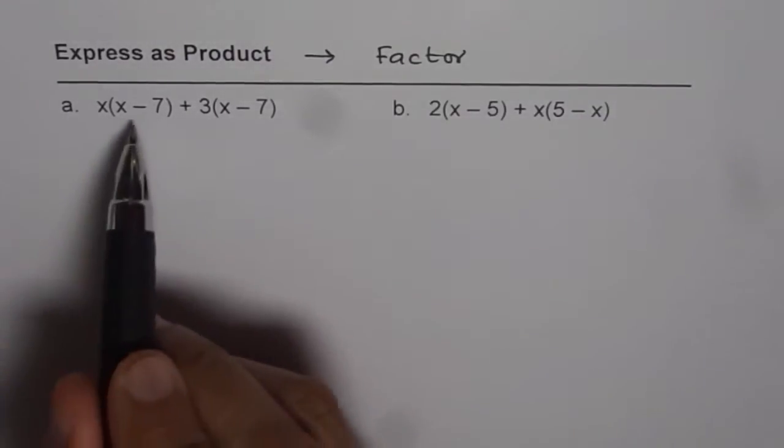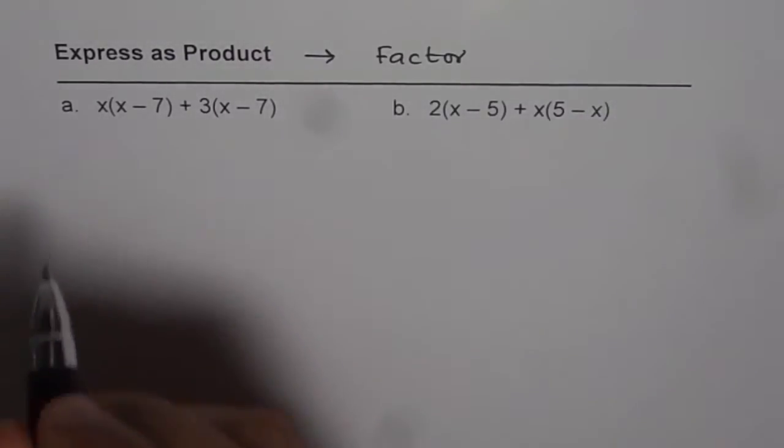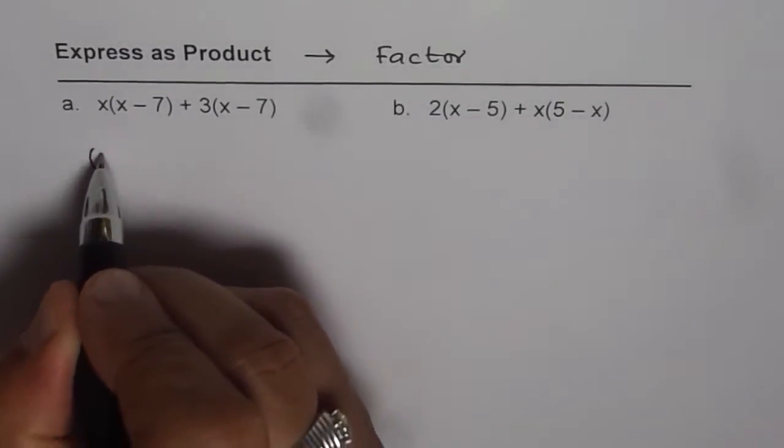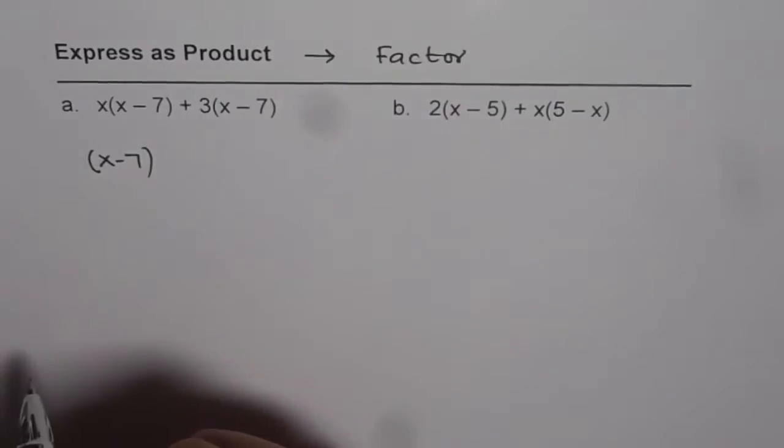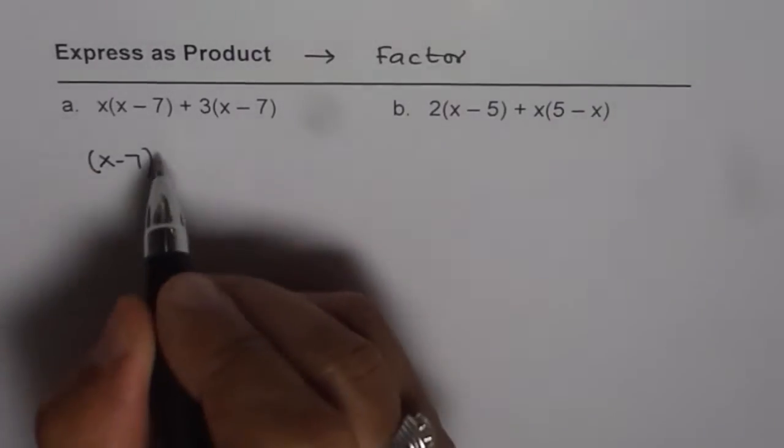Clearly, x minus 7 is a common factor. So we can factor x minus 7 from both the terms as a common factor. Then what do we get?